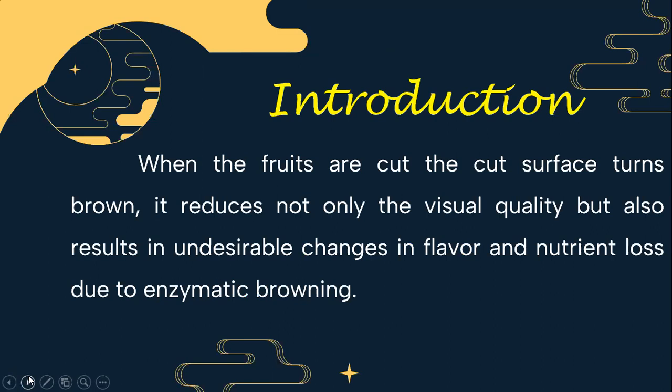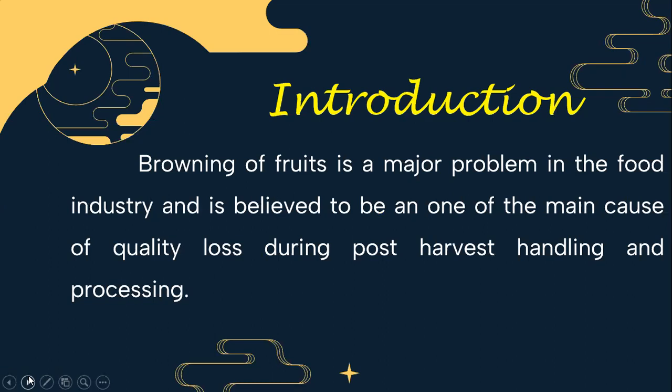When the fruits are cut, the cut surface turns brown. It reduces not only the visual quality but also results in undesirable changes in flavor and nutrient loss due to enzymatic browning. Browning of fruit is a major problem in the food industry and is believed to be one of the main causes of quality loss during post-harvest handling and processing of fruits and vegetables.